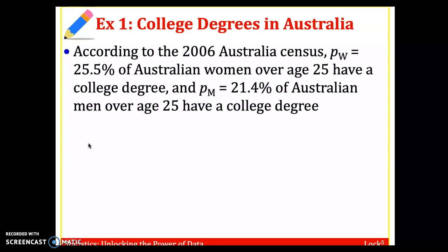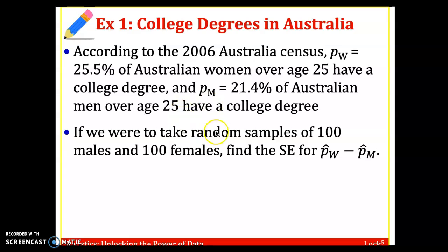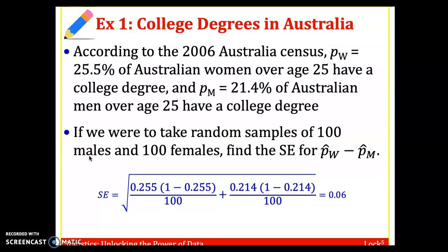According to the 2006 Australian Census, 25.5% of Australian women over the age of 25 have a college degree, and 21.4% of Australian men over the age of 25 have a college degree. If we take random samples of 100 males and 100 females, find the standard error for P-hat W minus P-hat M. We have the standard error formula equals P1 times 1 minus P1, we use females or women that have a college degree as P1, then divide it by 100, and then plus P2 times 1 minus P2 over 100. You throw all this in your calculator, add them together, then do your square root, then you should get the standard error to be 0.06.